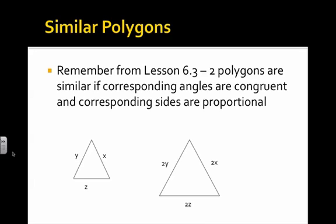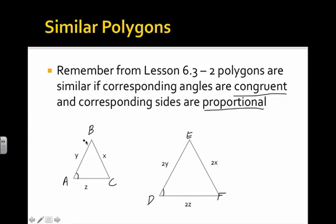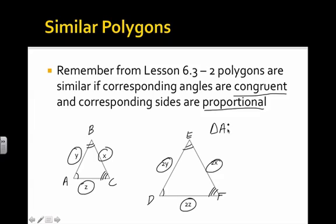Let's refresh from lesson 6.3. We were able to say that two polygons are similar if their corresponding angles are congruent to each other and their corresponding sides are proportional, meaning that they have a similarity ratio. For example, if we have triangle ABC and triangle DEF, if all corresponding angles are congruent — angle A to angle D, angle B to angle E, angle C to angle F — and their corresponding sides all have the same scale ratio, so Y and 2Y, X and 2X, Z and 2Z, then triangle ABC is similar to triangle DEF with a scale factor of 2.